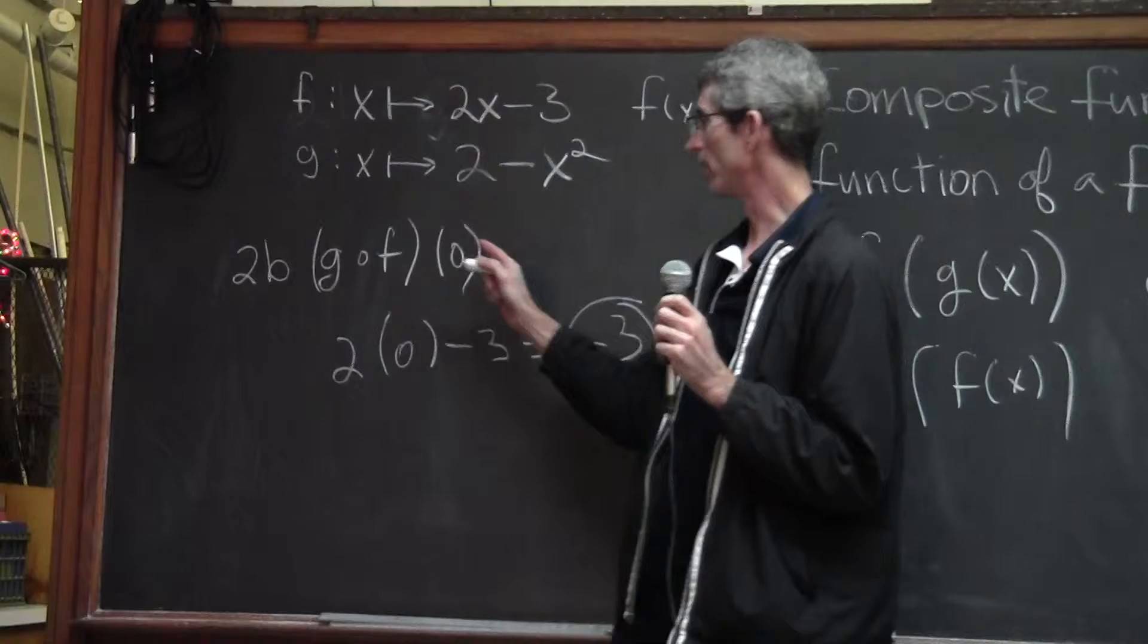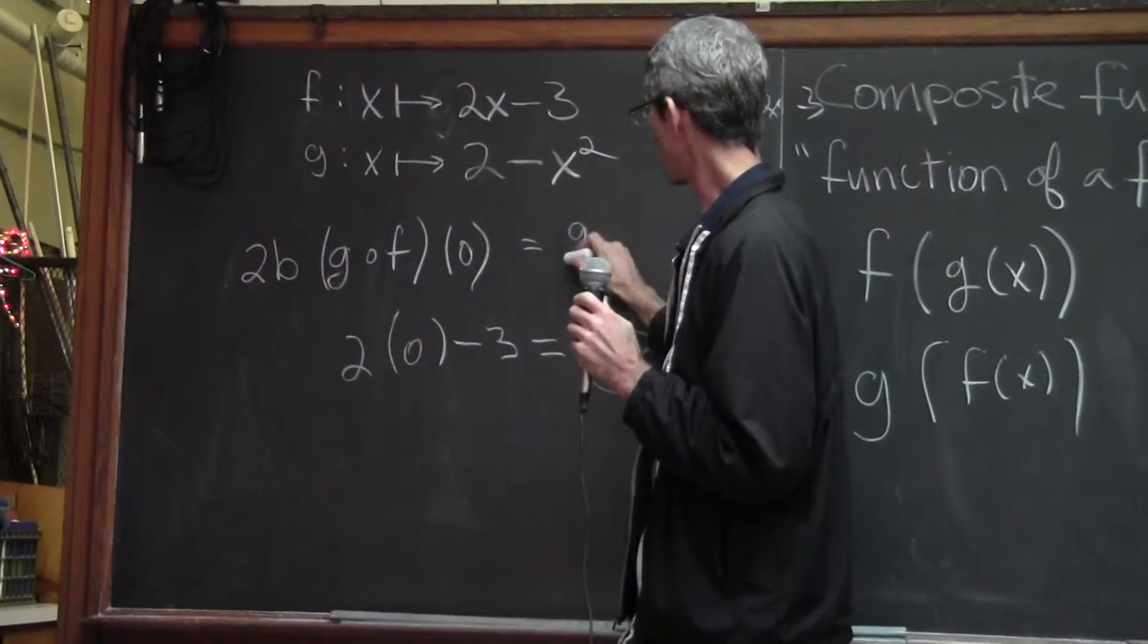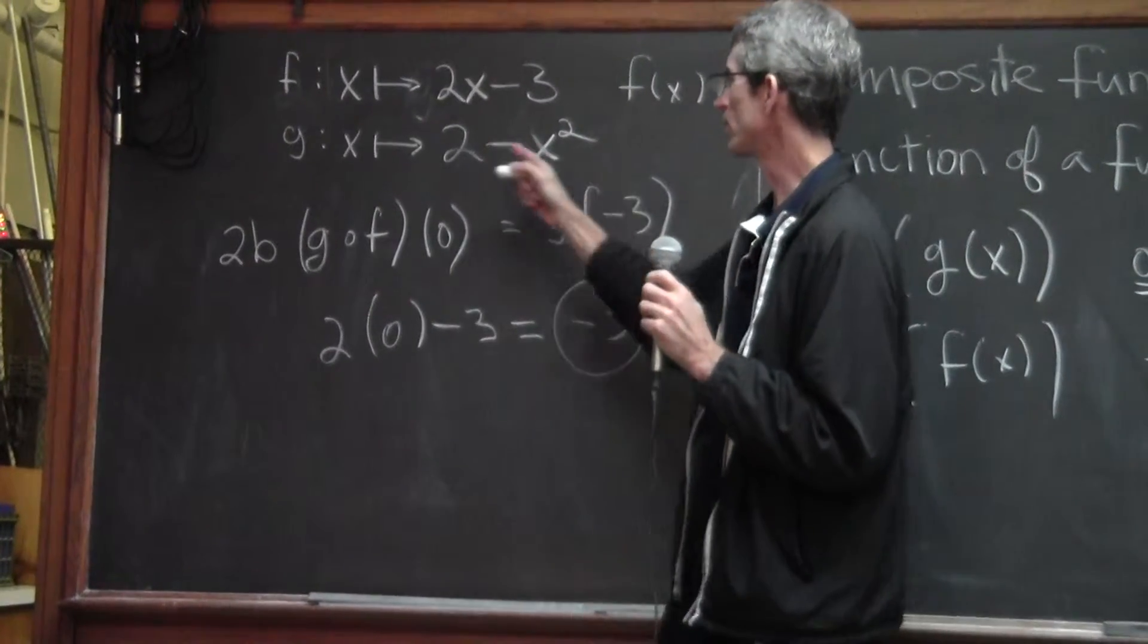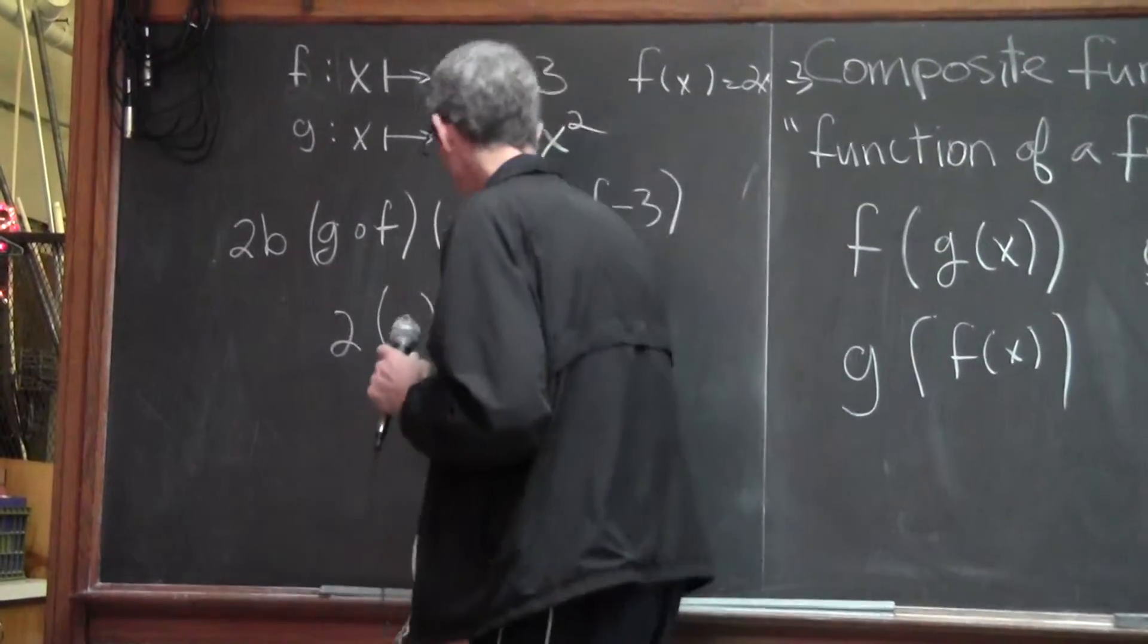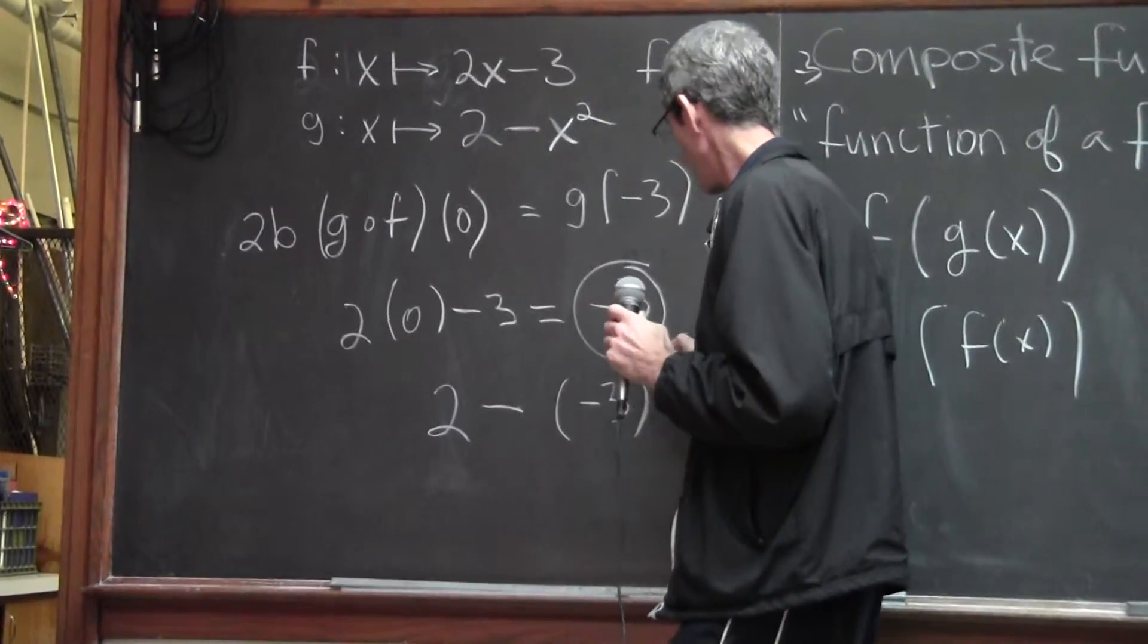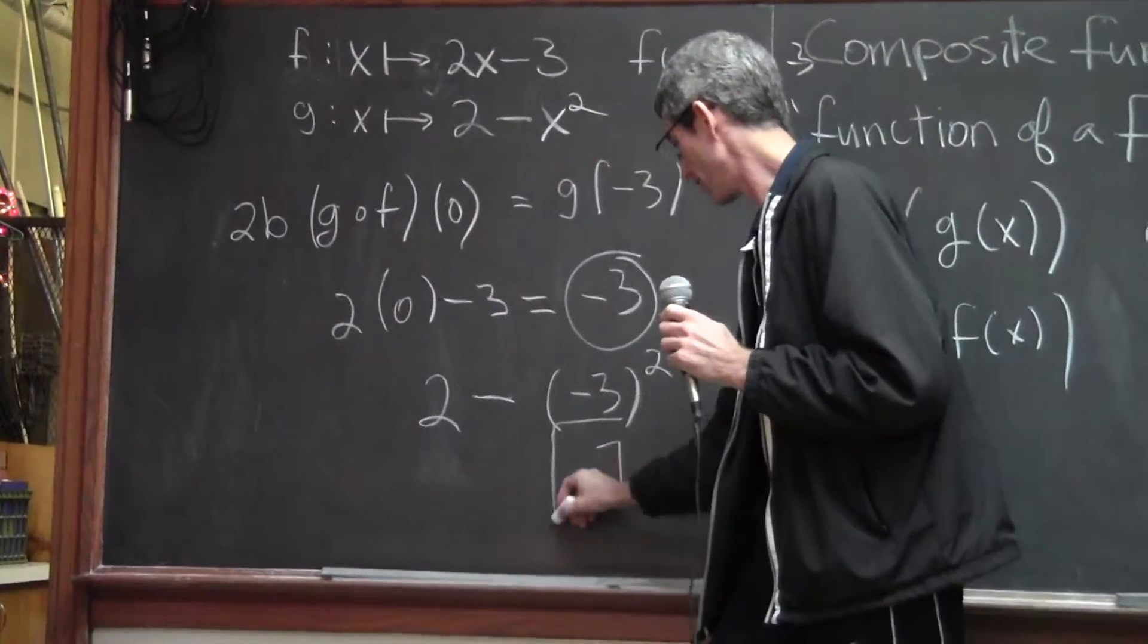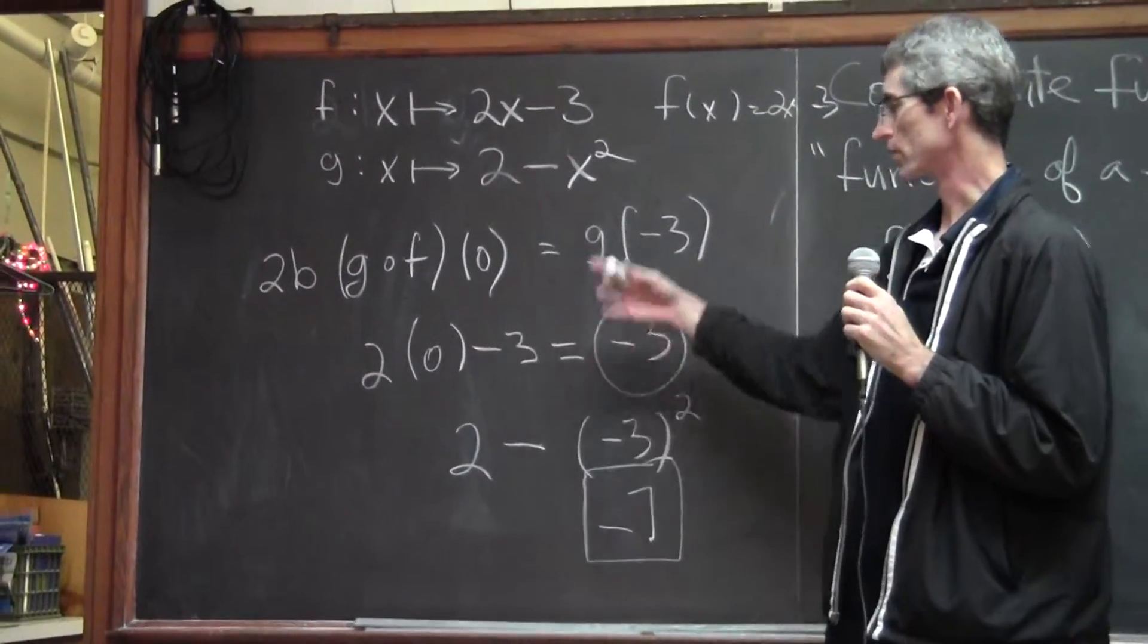Now you need to do the second part, now you need to find what's g. So now we can say it's really g of negative 3 because f of 0 is negative 3. So what's g of negative 3? So now I go to the g function, plug it into the x. I'm going to get 2 minus negative 3 squared. What's negative 3 squared? That's 9. 2 minus 9. That's negative 7. So that's your answer. Your final answer is negative 7. So it's a couple steps.